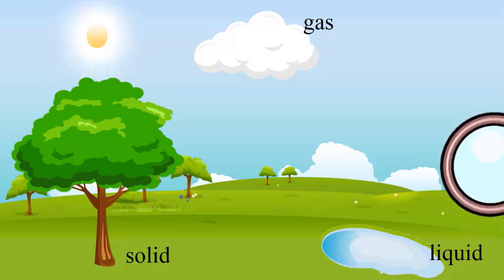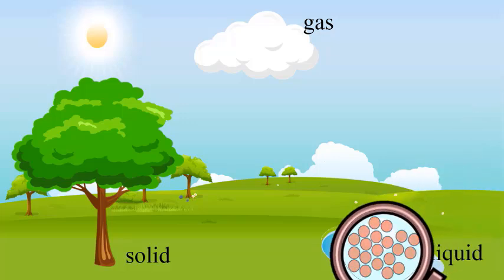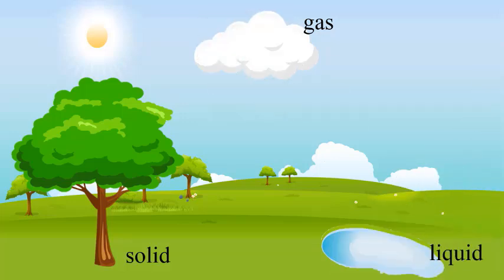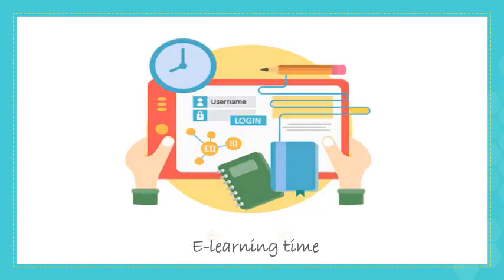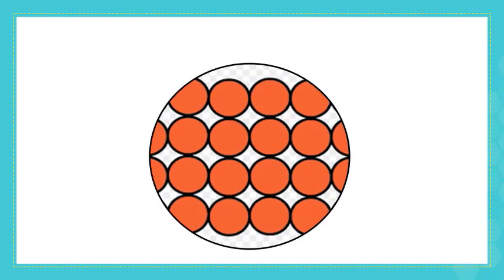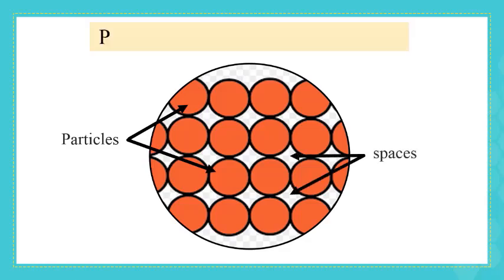Actually, solids, liquids, and gases are made up of tiny objects called particles. So let's learn more about these particles. In this figure, red circles represent the particles, and you can notice the spaces between them.